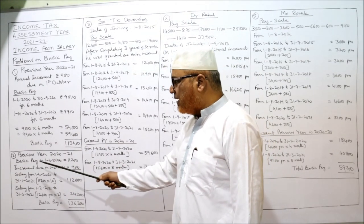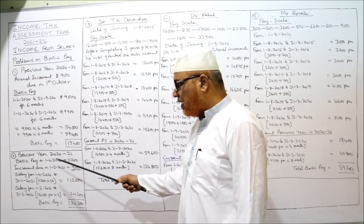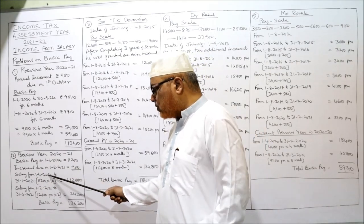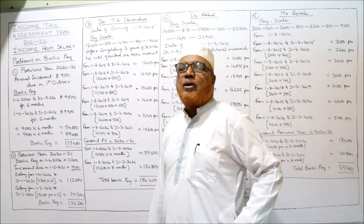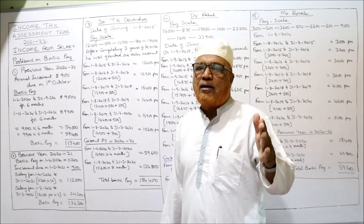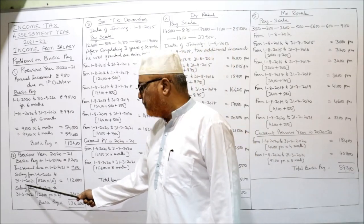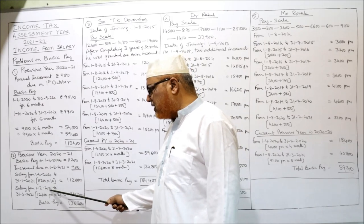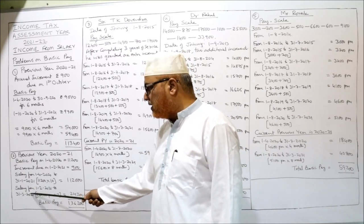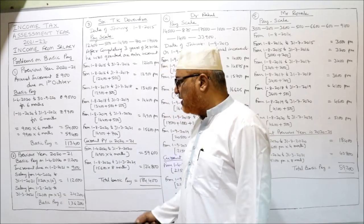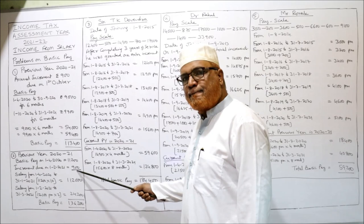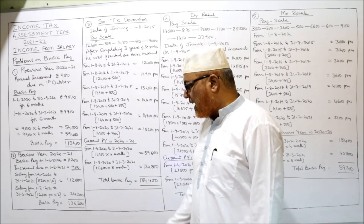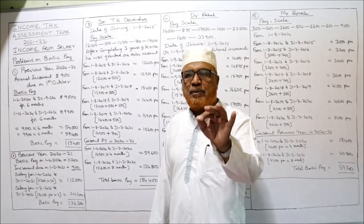For previous year 2021: basic pay on 1st April 2020 is 11,200; increment due on 1st February 2021. Salary from 1st April 2020 to 31st January 2021 — 10 months — at 11,200 = 1,12,000. Salary from 1st February 2021 to 31st March 2021 — 2 months — at 12,100 (11,200 + 900) = 24,200. Total basic pay = 1,36,200.